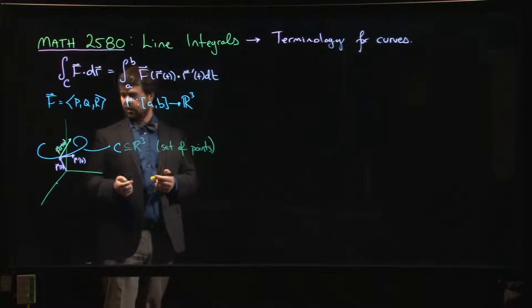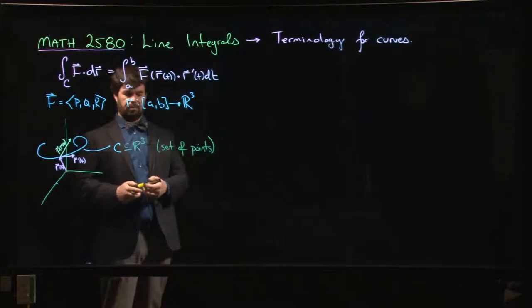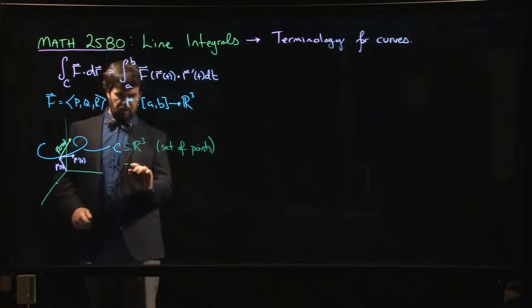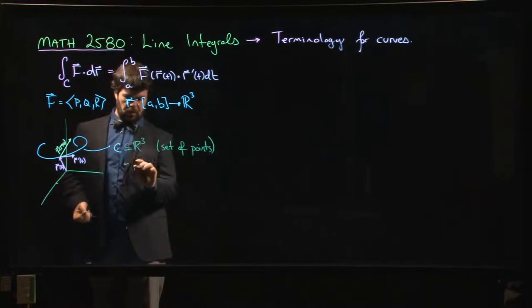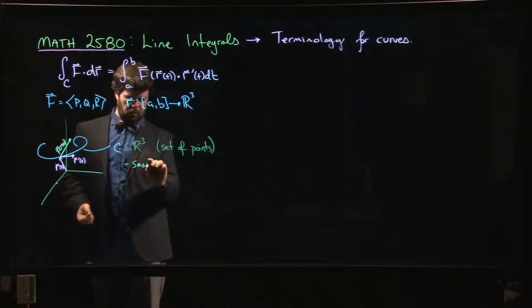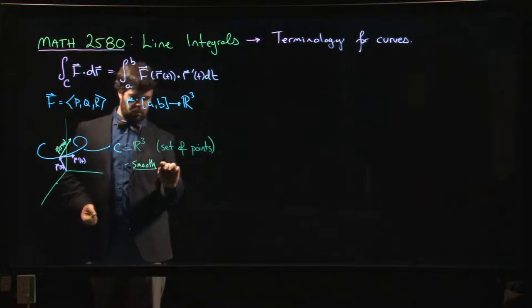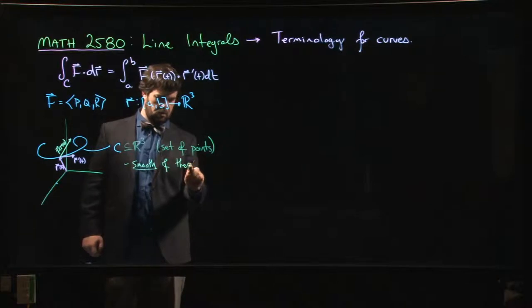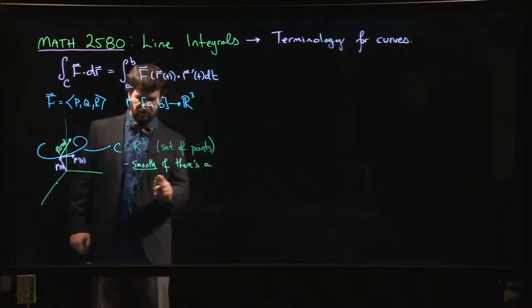So we have: a curve is smooth if you can find a parametrization.